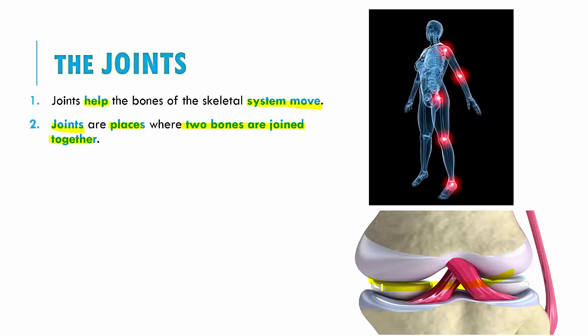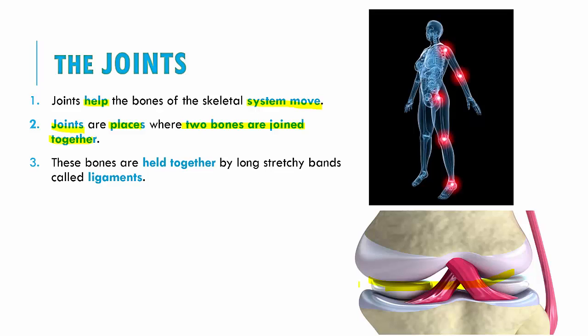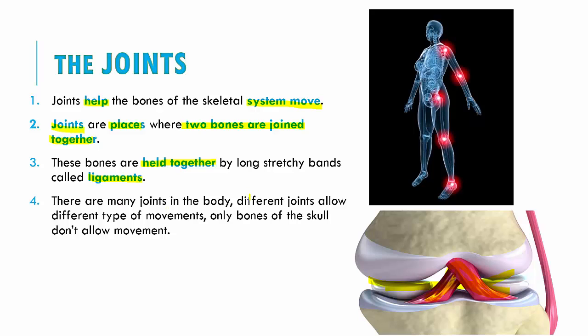Can you name a few joints in your body? Think — which joints are in your hand? You have elbows, wrists, and fingers; all of these are joints. That's why you are able to move them. These bones are held together by long stretchy bands called ligaments. This red stretchy band you see here is nothing but a ligament. There are many joints in the body and various joints allow different kinds of movements.